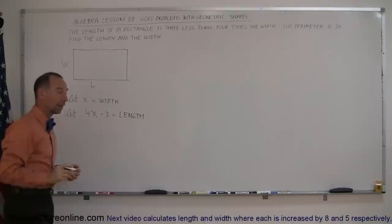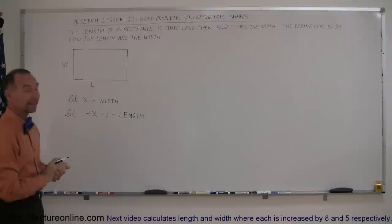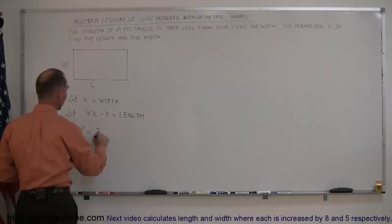So now that we have both the width and the length expressed in terms of x, we can now go ahead and use the information. They tell us that the perimeter is 34. So we can say that the perimeter, which is defined as twice the width, plus twice the length.